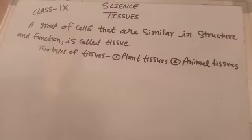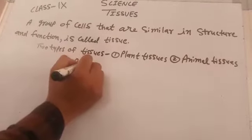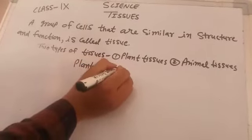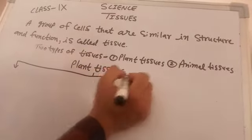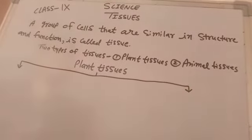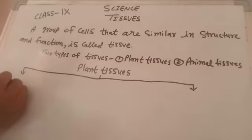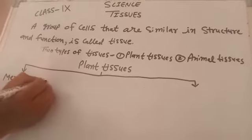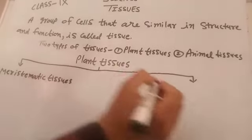First of all, we classify the plant tissues. Plant tissues are divided into two types: first, meristematic tissues, and second, permanent tissues.